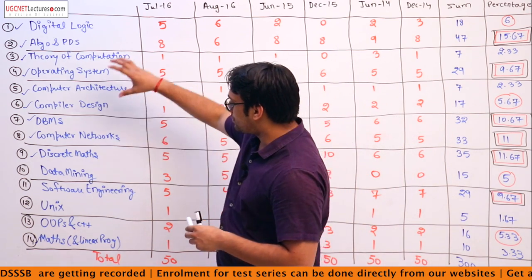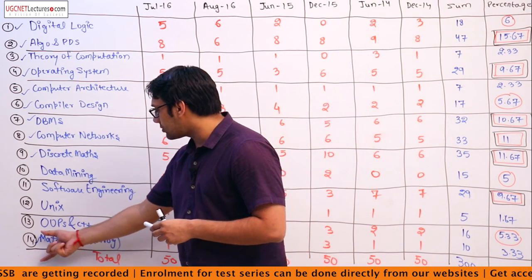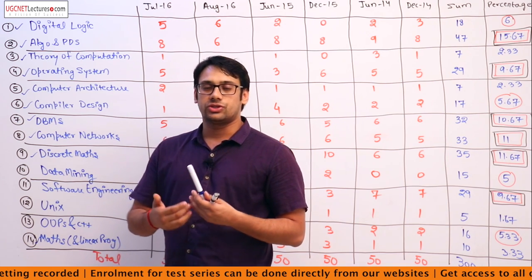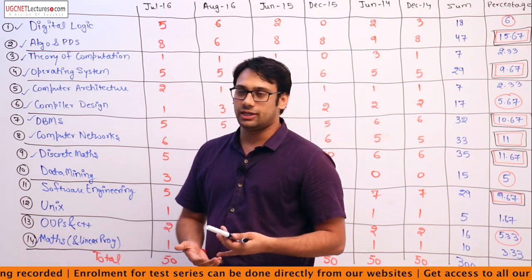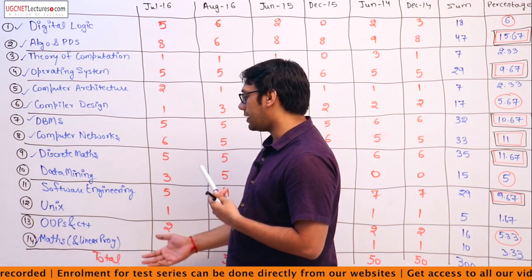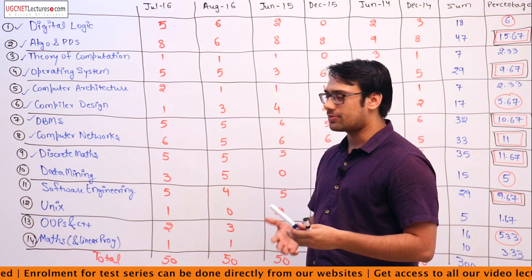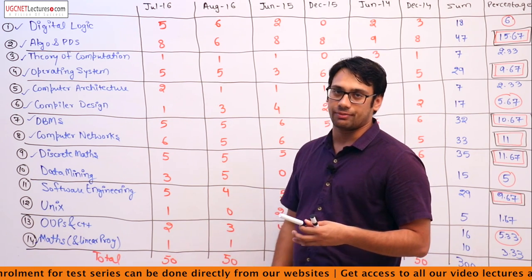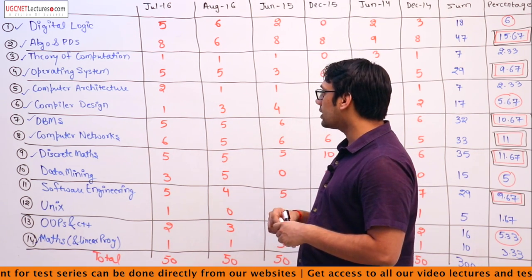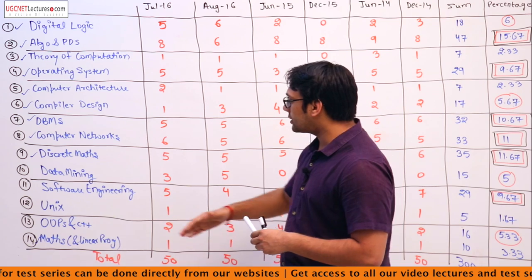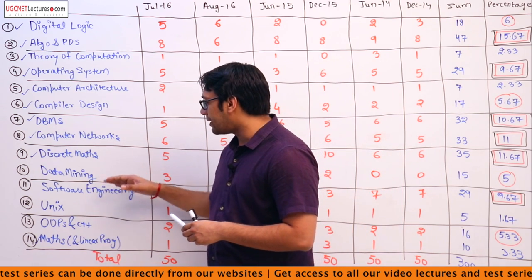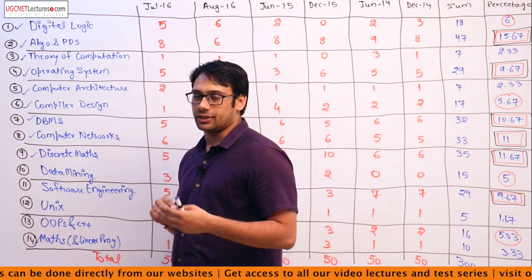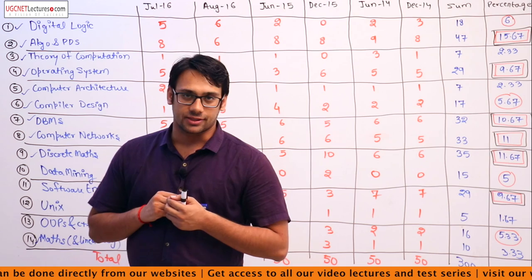Out of all these subjects, in GATE we have engineering mathematics which is more in-depth compared to UGC-NET, because in UGC-NET we have linear programming. The subjects which are data mining, software engineering, UNIX, OOPS, and C++ are not present in GATE examination.